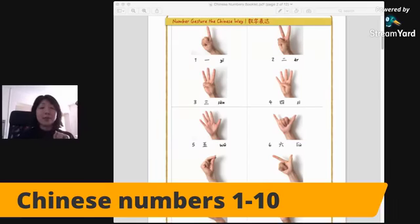In Chinese, one is yī - we count with only one finger, our pointer. Two is èr, which is different from the English way. Three is sān - like this, or some people do it this way. Either way, both are okay.